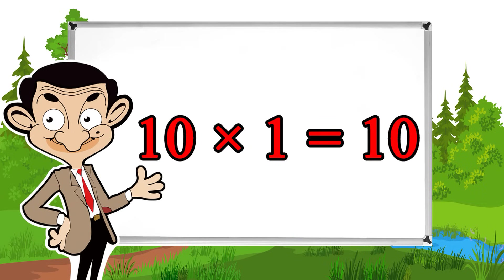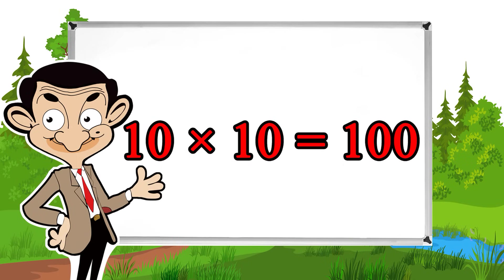10 times 1 equals 10, 10 times 2 equals 20, 10 times 3 equals 30, 10 times 4 equals 40, 10 times 5 equals 50, 10 times 6 equals 60, 10 times 7 equals 70, 10 times 8 equals 80, 10 times 9 equals 90, 10 times 10 equals 100.